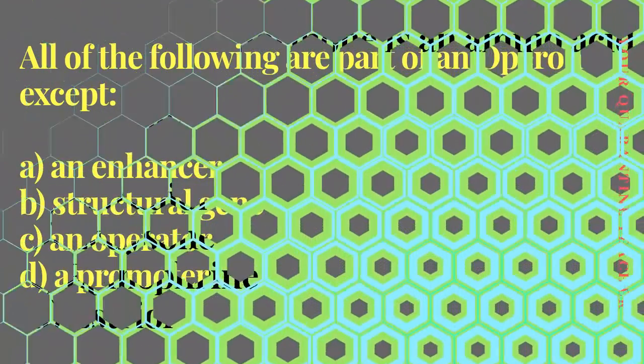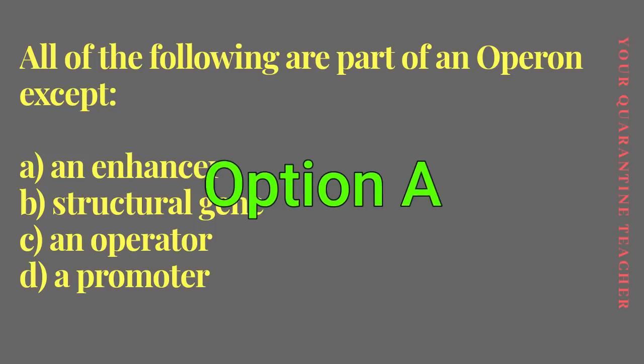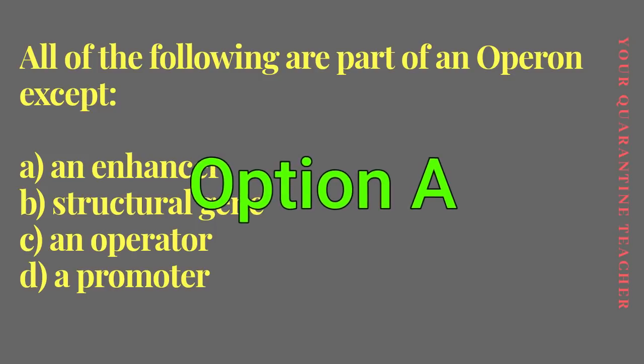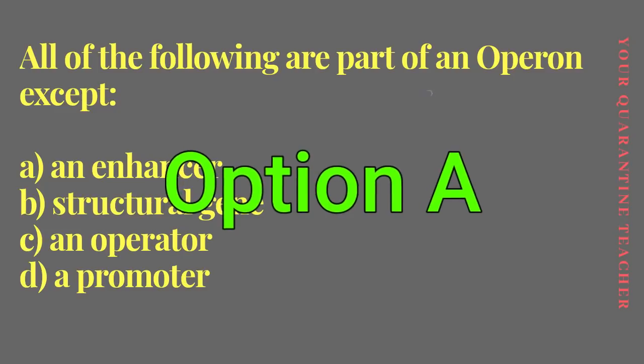Next question: all of the following are a part of an operon except. Option A: enhancer, Option B: structural gene, Option C: an operator, Option D: a promoter. Options B, C, and D are parts of an operon. So the answer — what is not part of an operon — is Option A, the enhancer.